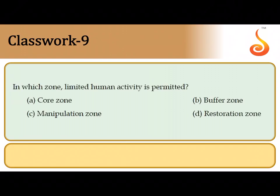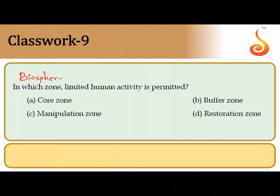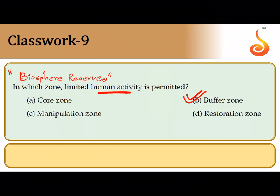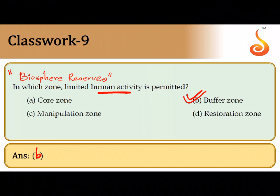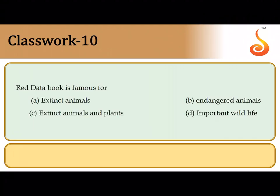The ninth question asks in which zone limited human activity is permitted. These are the zones of biosphere reserves, which are in-situ conservation units. There are three distinct zones: a core zone, a buffer zone, and a manipulation zone. Limited human activity is allowed in the buffer zone, where research centers, educational training centers, tourism, and recreational activities can be permitted. In the manipulation zone, human settlements including tribal settlements can occur.